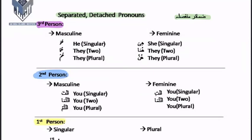The third person is the person who is not present in front of us — the person who is absent. For the third person masculine, we use 'huwa' for the singular, 'huma' when they are two, and 'hum' when they are plural — that is, more than two.